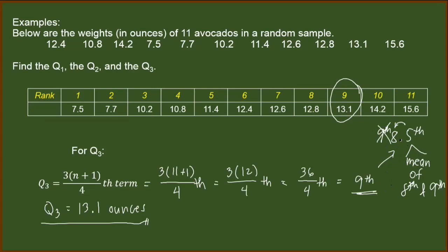So again, if you encountered a decimal number as an answer for quartiles, you will always get the mean of the two involved positions.